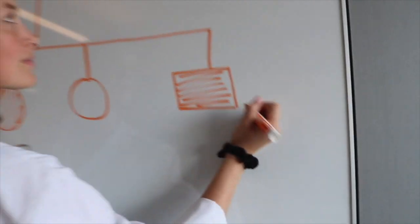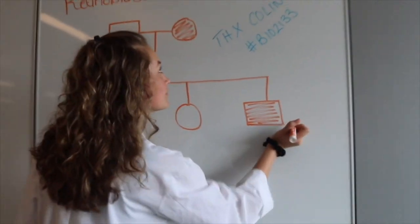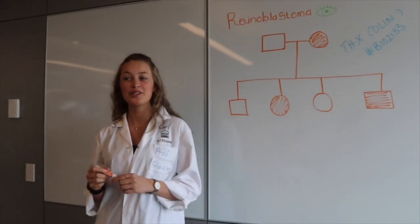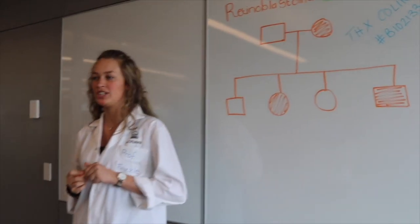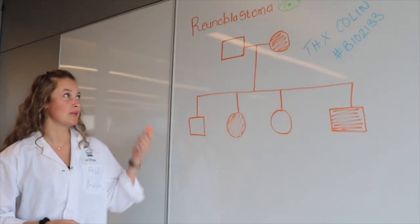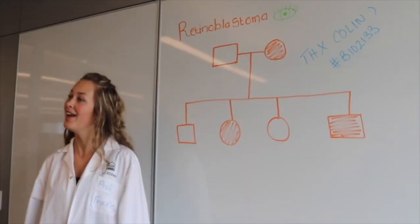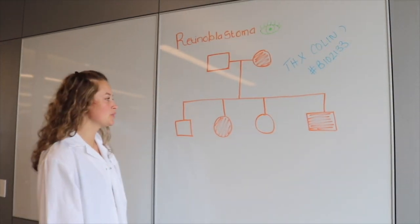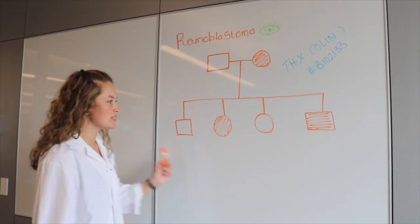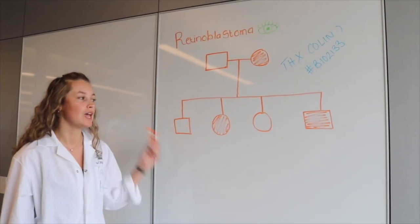So then what was the first tumor suppressor gene that was discovered? Well, the first tumor suppressor gene that was discovered was for retinoblastoma, a malignant tumor of the retina. An inheritance pattern was recognized where about 50% of the children of an infected parent got the disease. 50%? Wow!